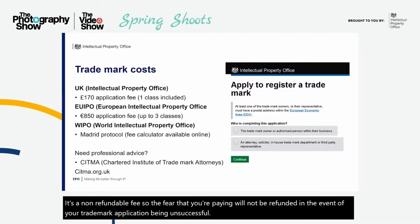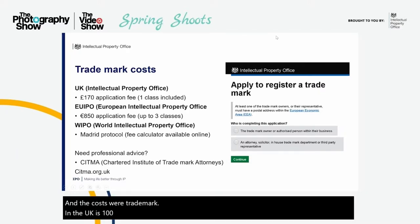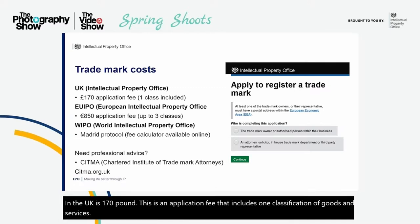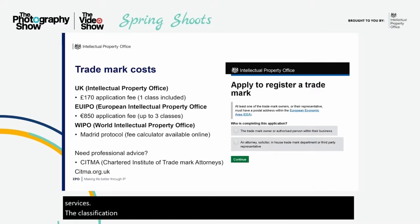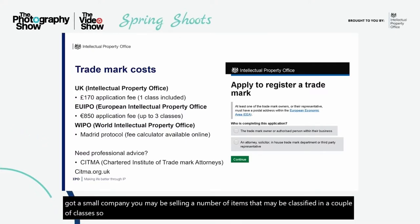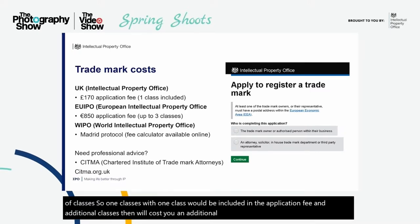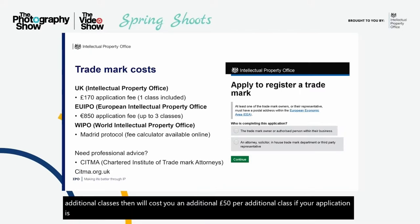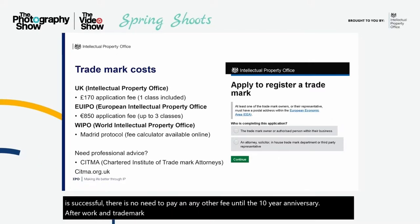The cost for a trademark in the UK is £170. This is an application fee that includes one classification of goods and services. A classification is basically a category in which your company is categorised under. If you've got a small company, you may be selling items that fall into a couple of classes — one class is included in the application fee, and additional classes cost an additional £50 per class. If your application is successful, there's no need to pay any other fee until the 10-year anniversary of your trademark, by which time you will renew it for the same fee as the initial application.